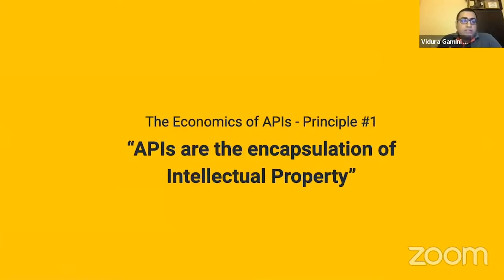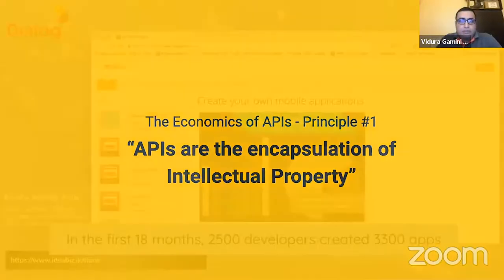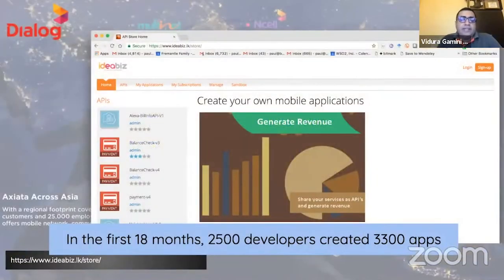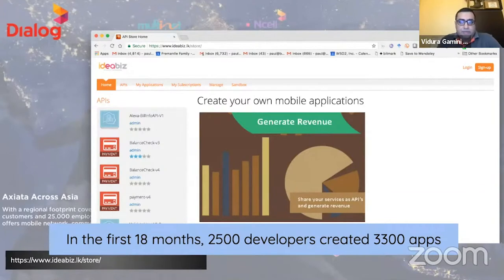The economic value of an API can be broken down into three categories: first, the individual value an API brings — if you take the API on its own, what's the individual value it delivers?